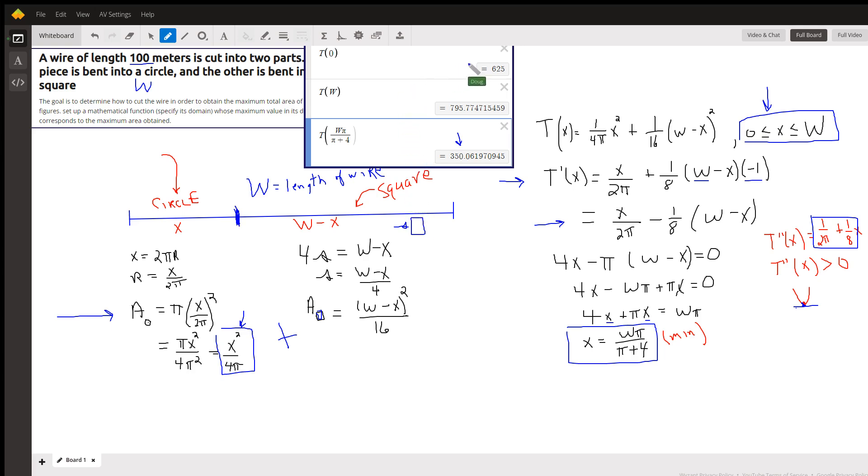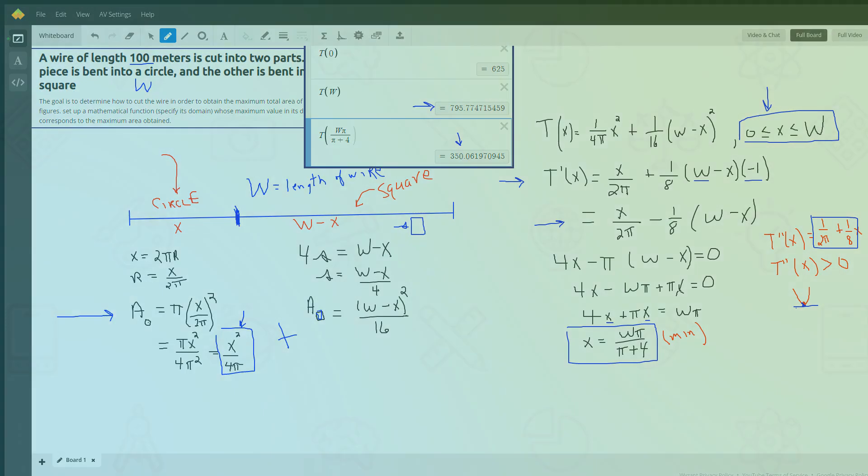And the maximum area occurs when we've got all circle, okay, no square at all. There you go, hope that helped. If you have any questions, post a comment.